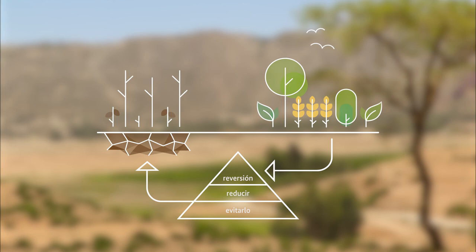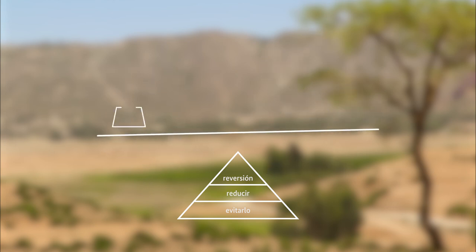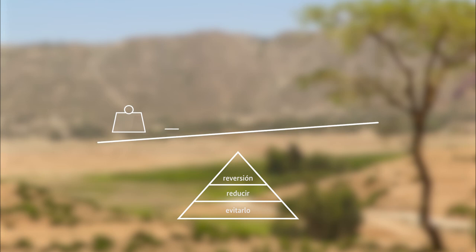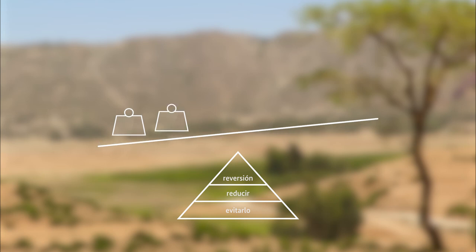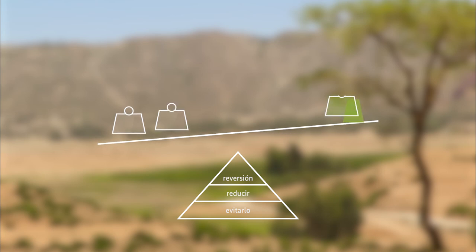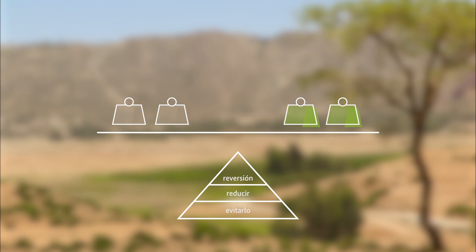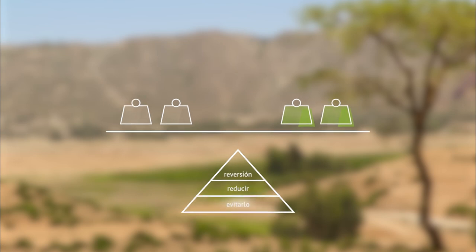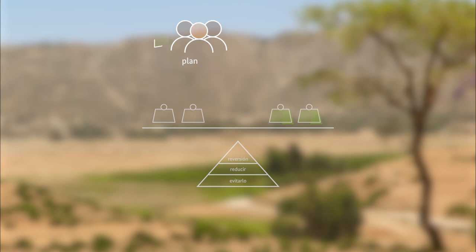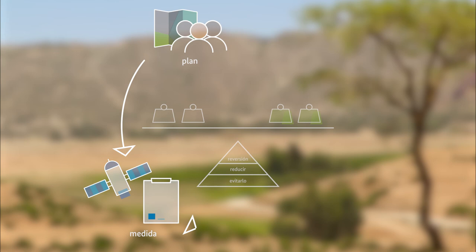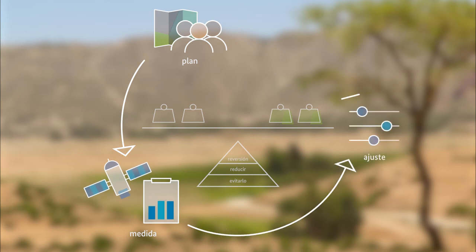Idealmente, la neutralidad resultante equilibra el uso de la tierra para que, en términos netos, cualquier nueva degradación se contrarreste con la inversión de una degradación anterior. Como la neutralidad en la degradación de la tierra es un mecanismo directivo continuo que requiere la combinación correcta de acciones, se vuelve vital contar con un proceso continuo de planificación, seguimiento y ajuste.